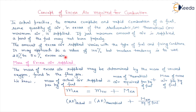The mass of excess air required for the combustion may be determined by the mass of unused oxygen found in the flue gas. In the flue gas, if there is some oxygen present, then that will be the unused oxygen, and that will represent the excess air.